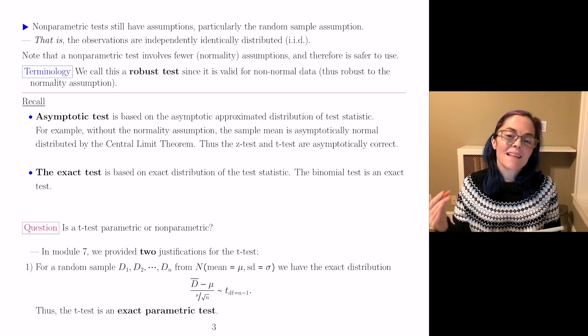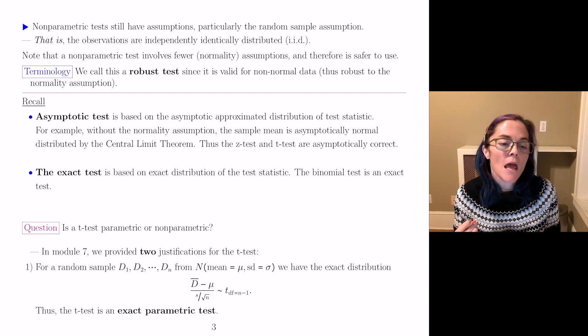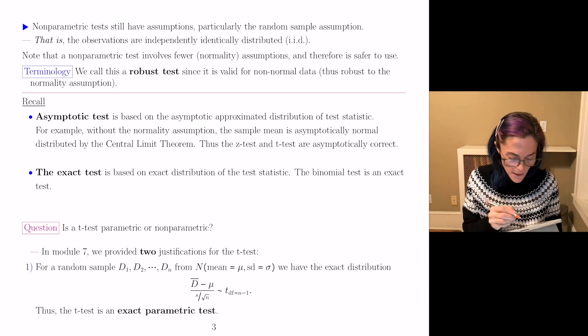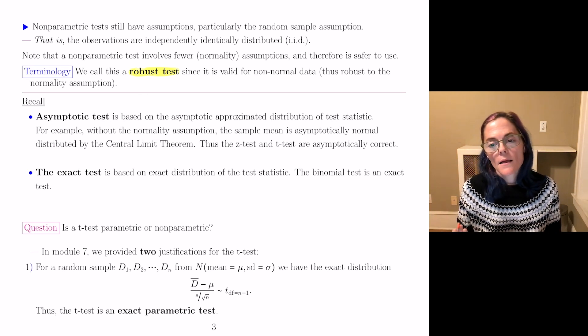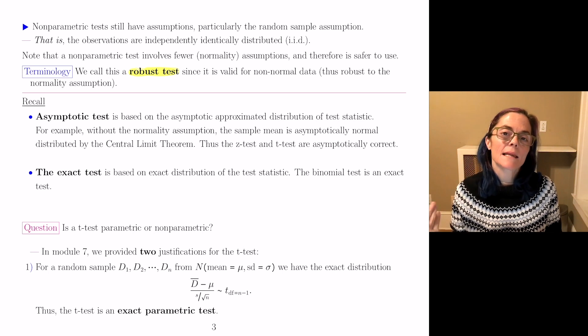However, a nonparametric test has fewer assumptions, in particular, the normality assumption and is typically safer to use. The terminology here is called a robust test. Since it is valid for non-normal data, it's robust to the normality assumption.